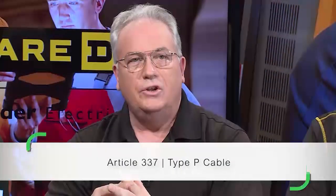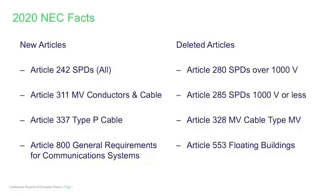There's also a new Article 337, and its title is Type P Cable. For all practical purposes, this Type P cable is shipboard or marine-style cable that is commonly used in applications such as offshore oil drilling platforms and so forth. The NEC now sets requirements in Article 337 for Type P cable.